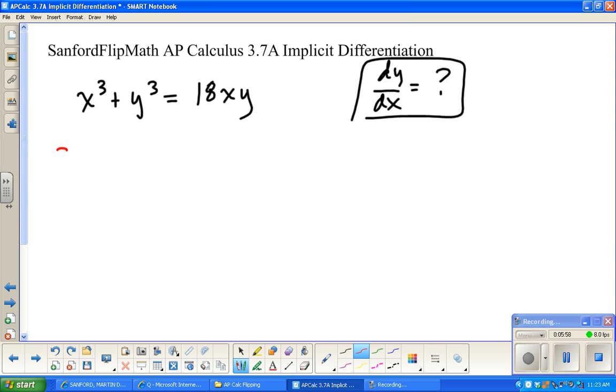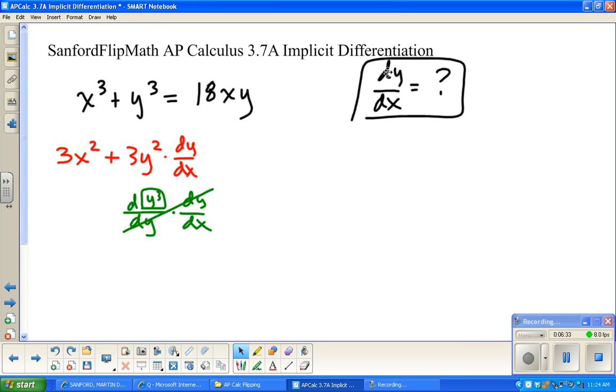So, here we go. Derivative of x cubed is 3x squared. And that's already with respect to x. So, I'm good. Derivative of y cubed is 3y squared. But, I'm really, this was the derivative with respect to y. I need to multiply this by the derivative of y with respect to x. So, again, symbolically, what just happened was, I did the derivative of y cubed with respect to y times the derivative of y with respect to x. Symbolically, that really is the same thing as the derivative of y cubed with respect to x.